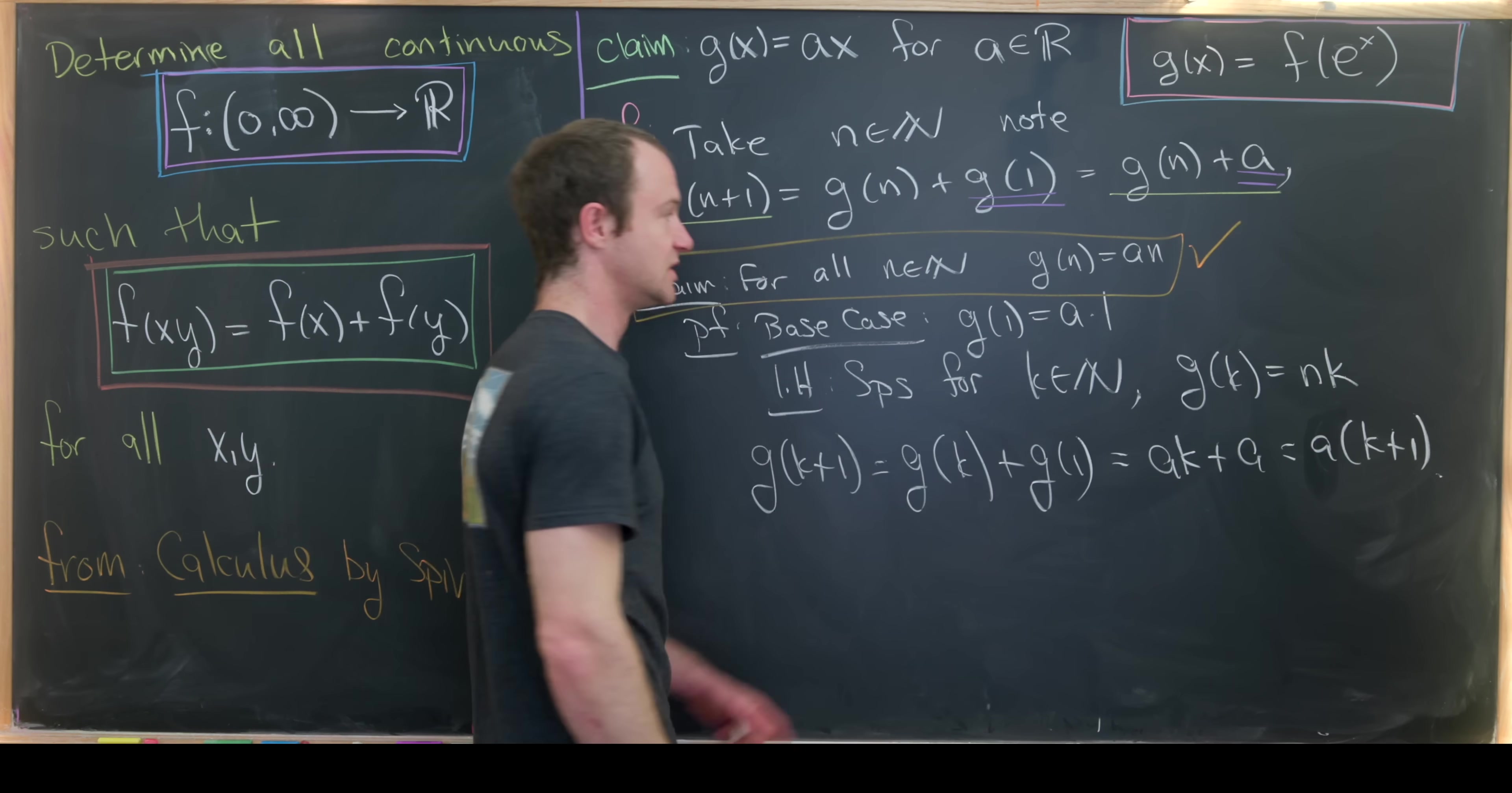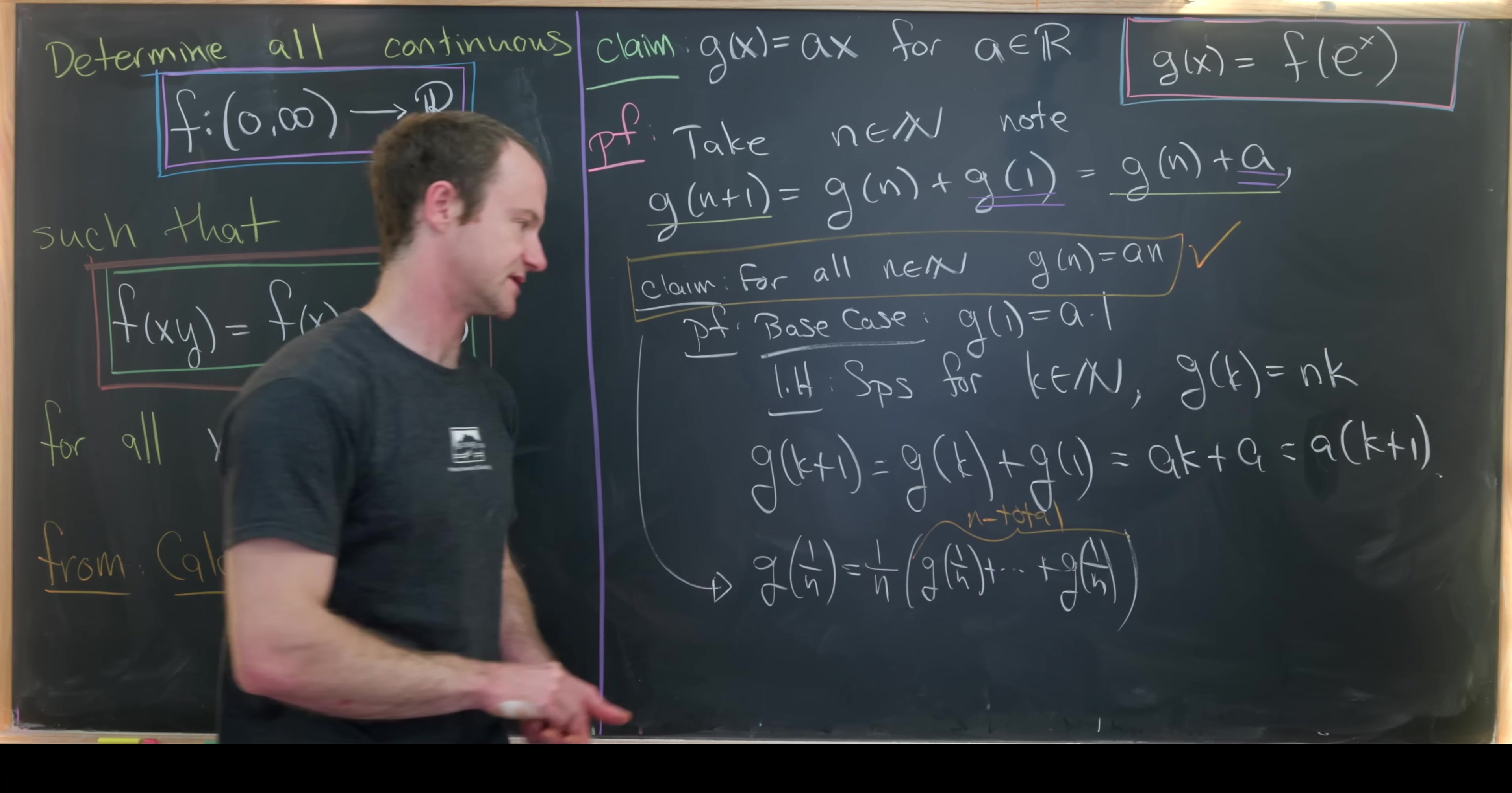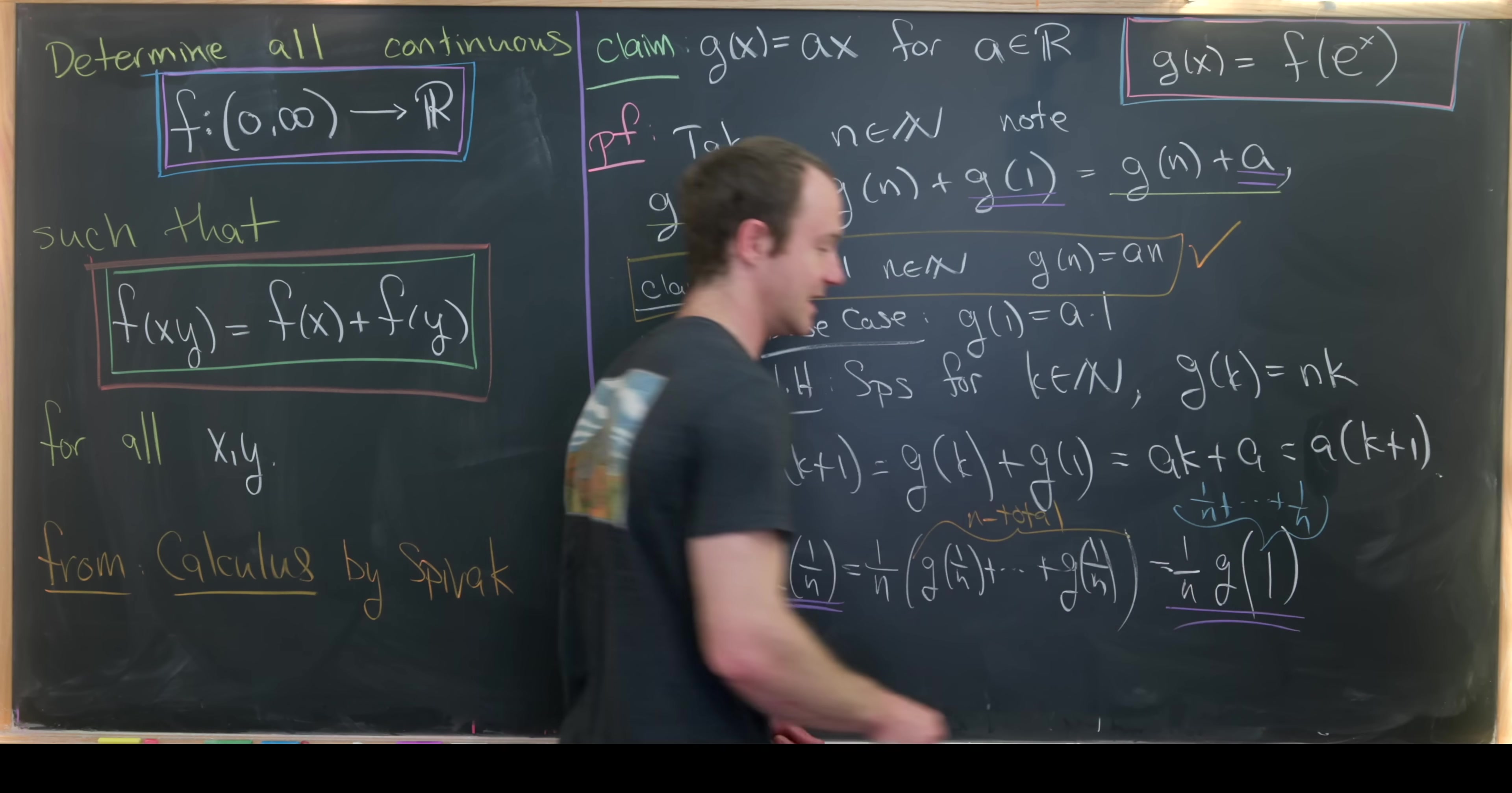In other words, for all natural numbers, g has the right form. And now we'd like to move this to all rational numbers. Well, let's notice that g(1/n) is exactly equal to 1/n times the sum of n total g(1/n). So just to reiterate, these are n total g(1/n). And that's just because n/n is equal to 1. But now we can push all those together and we have 1/n times g(1/n) added to itself n times, which is equal to 1. So the calculation that we did right here is 1/n plus all the way up to 1/n. Great. And now we see that g(1/n) is exactly equal to what we want, 1/n times g(1), which is a times 1/n.